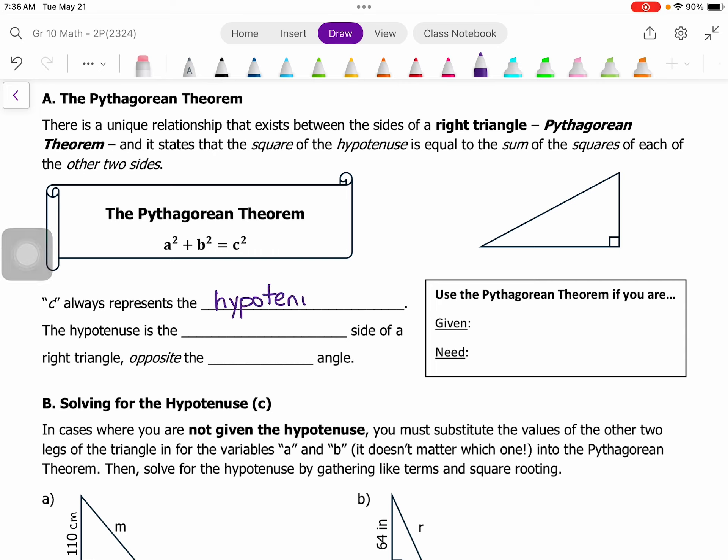And the hypotenuse is always the longest side of a right triangle, which is opposite from the right angle. So you may recall that we've talked about the fact that there's a relationship between the size of an angle and the size of the side across from it. The right angle or the 90 degree angle is the largest angle in a right triangle. And so across from it is the longest side, which is called the hypotenuse.